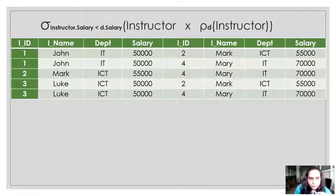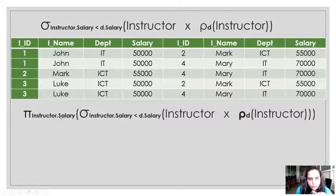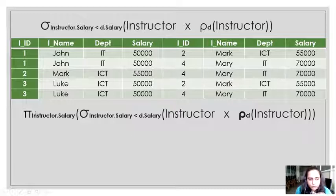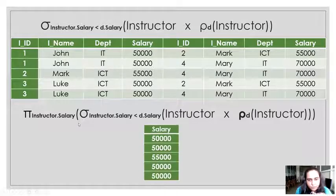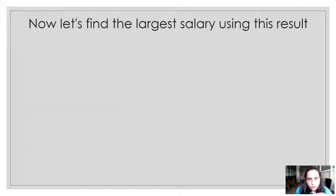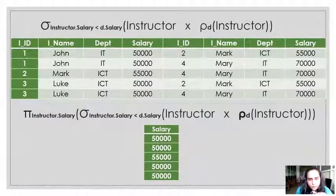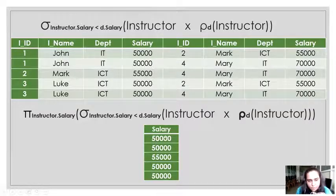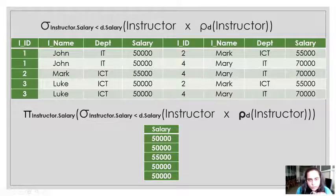Now let's say I want to add a project operation to this query. From this relation, I only want the salary column of the first relation, so I use the project operation writing down instructor.salary. This leaves me with only one column from the entire table. Then what I'll do with this is find the largest salary. The salary column fetched contains all salaries present in the instructor relation — it contains 50, 55, and 50 again multiple times — all salaries except 70,000.